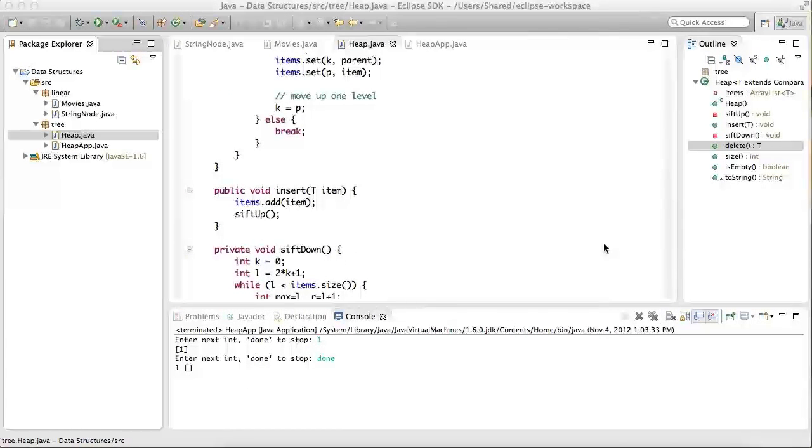The insert method is fairly straightforward. The new item is first added to the end of the array list with the add method, then sifted up with a call to the sift up method.